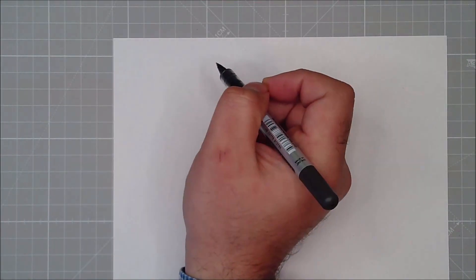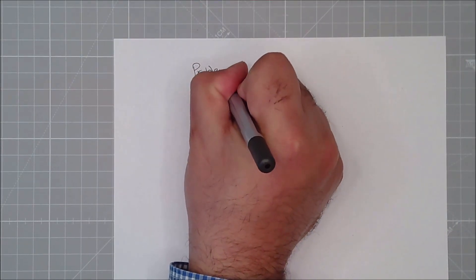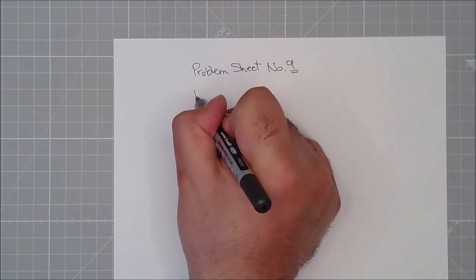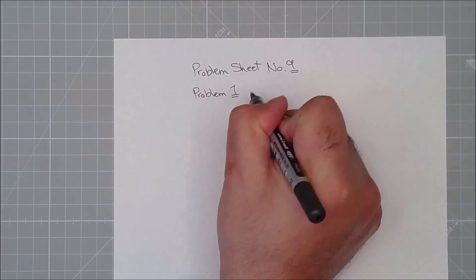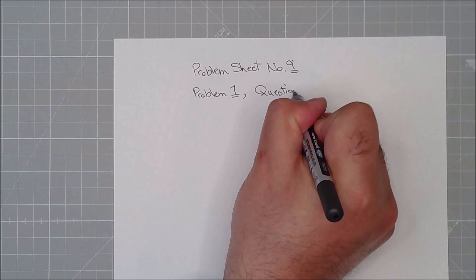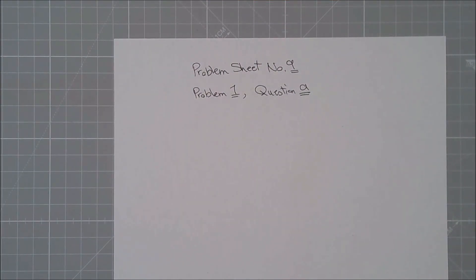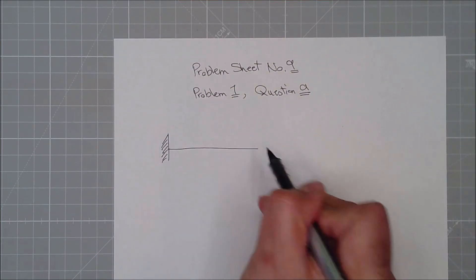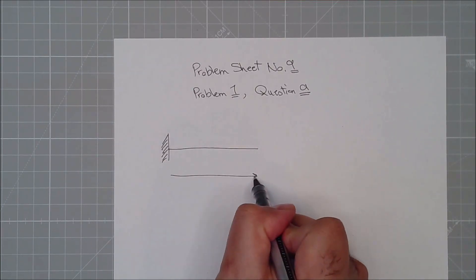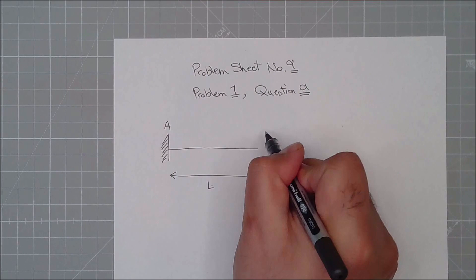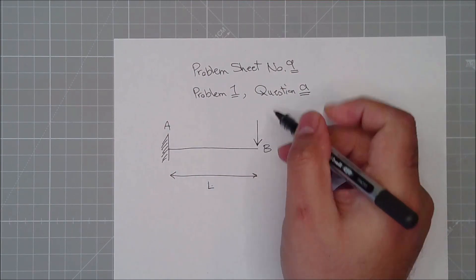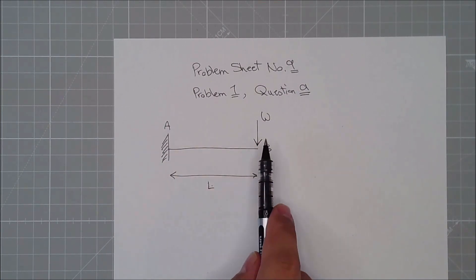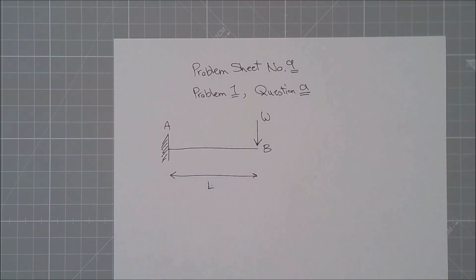Let's solve one of the questions from problem sheet number nine, problem one, question A. It's a cantilever beam, but this time the fixed support is on the other side. It has length L, with point A and point B, and a single unit load W is applied. In the previous example it was a distributed load of W, so this is now a concentrated load with units of kilonewtons or newtons.